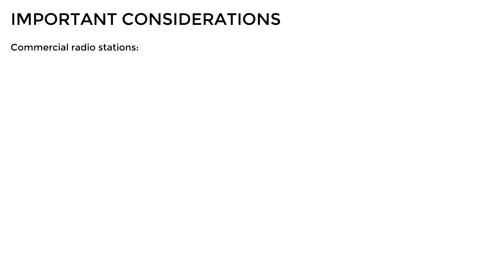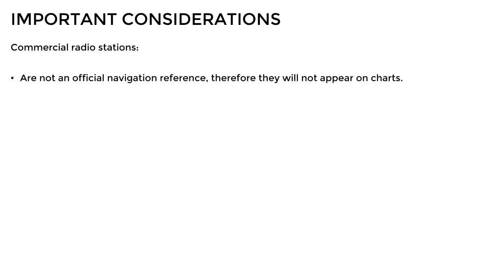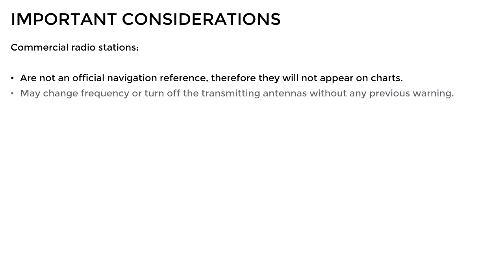However, there are important aspects to consider when using commercial radio stations with the ADF. First of all, they are not an official NAVAID and therefore will not appear on aeronautical charts. Also, they may change their frequency or turn off the transmitting antennas without any previous warning to air traffic. And finally, they may have very weak transmitting power, since they were not originally designed to be used as a NAVAID.